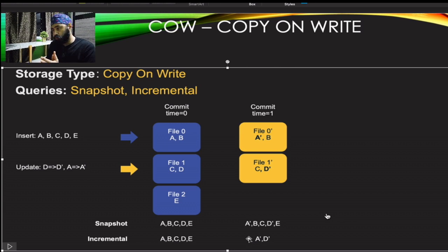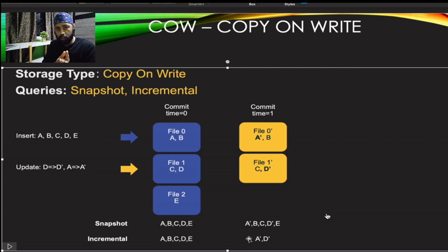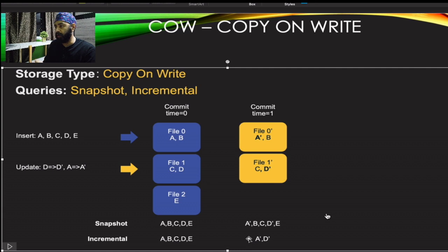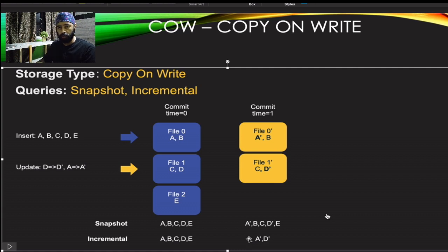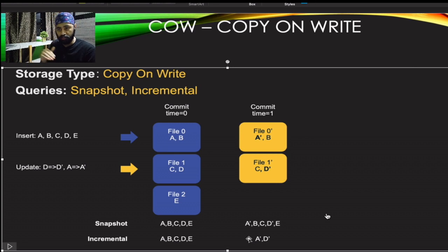Before Hoodie, for incremental processing you'd have to track changes yourself — keeping track of a timestamp field and querying which records changed between two times. Now Hoodie takes care of all of that automatically.